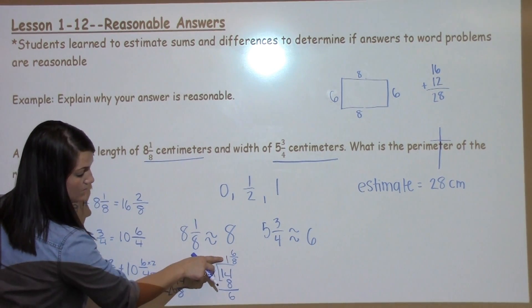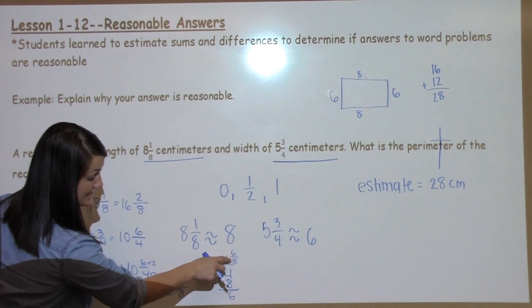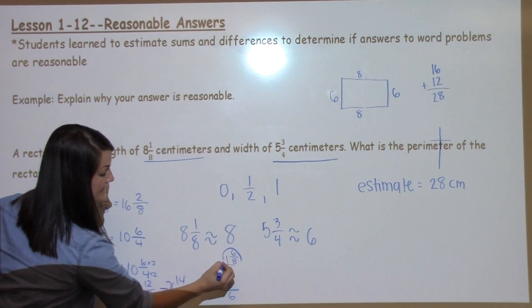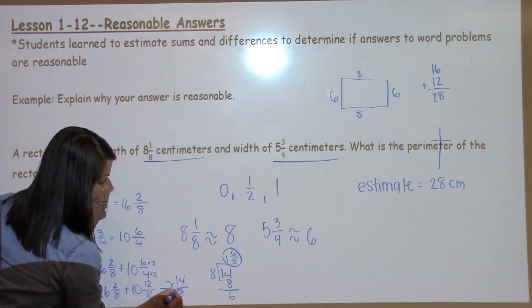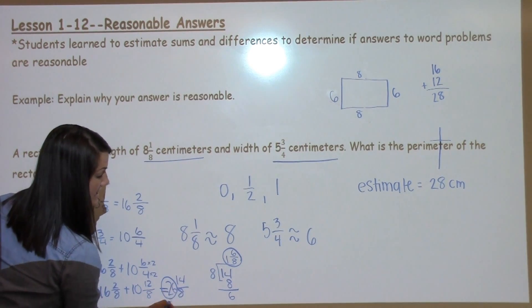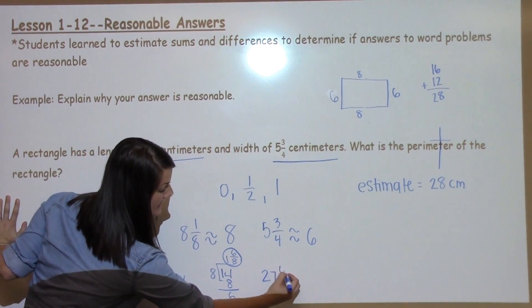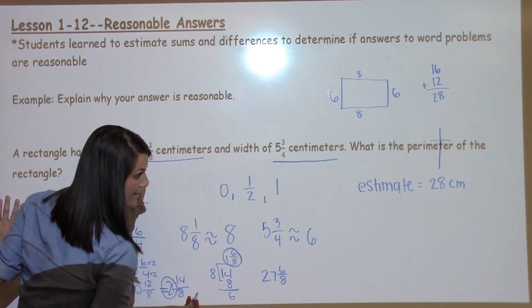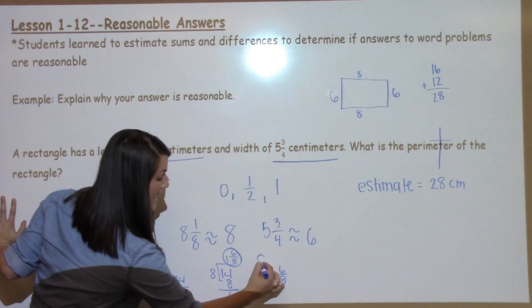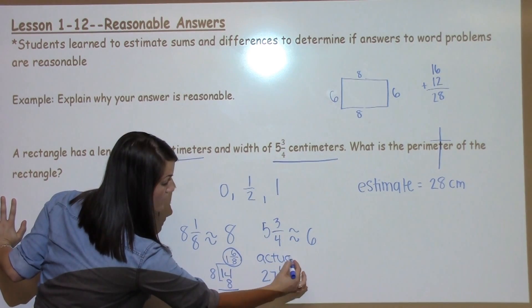14/8 is what I took and changed to 1 and 6/8. So now I need to take this answer and my whole number 26, put them together to get 27 and 6/8 as my final answer. So this is my actual answer, my real difference.